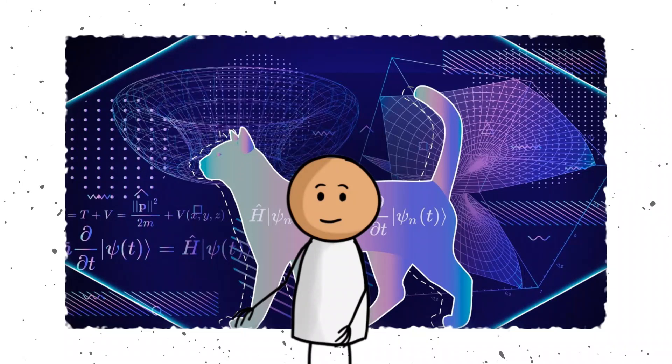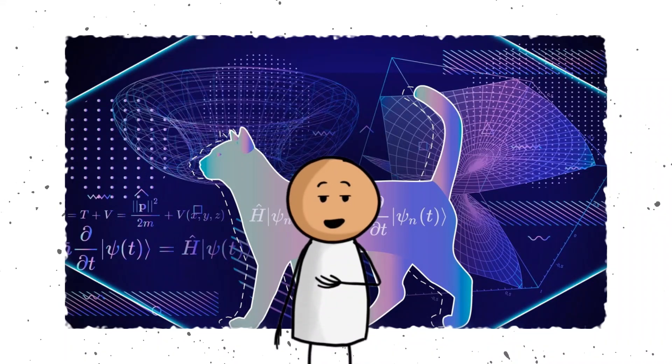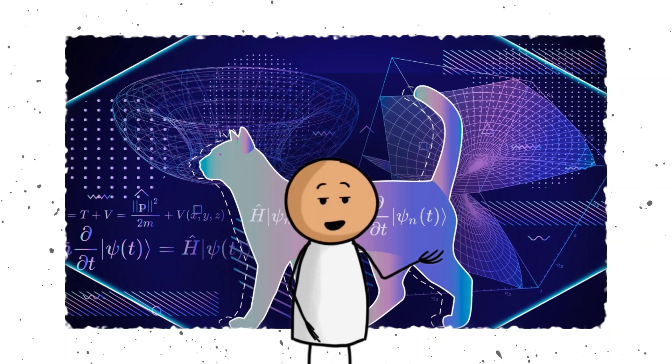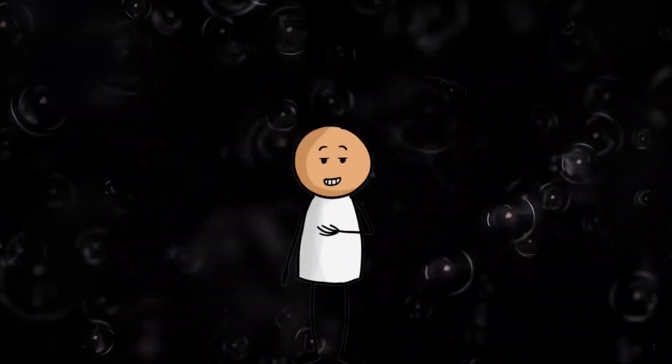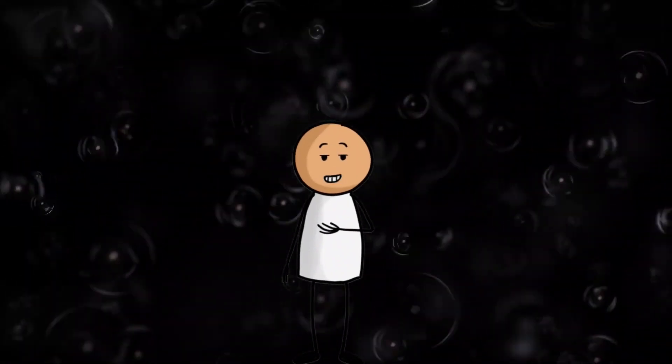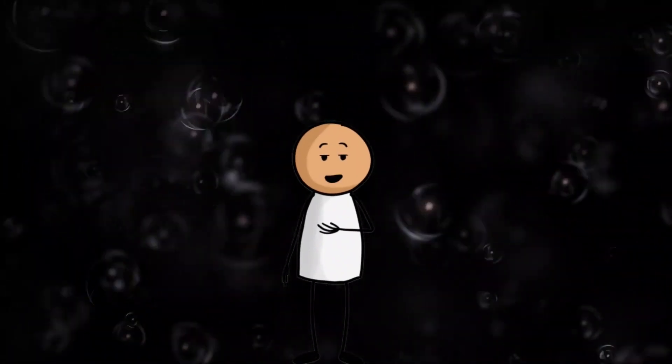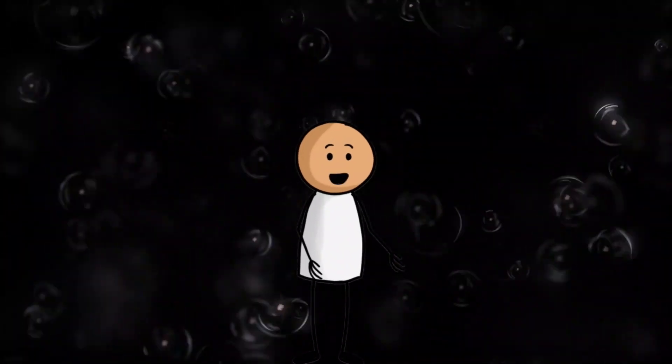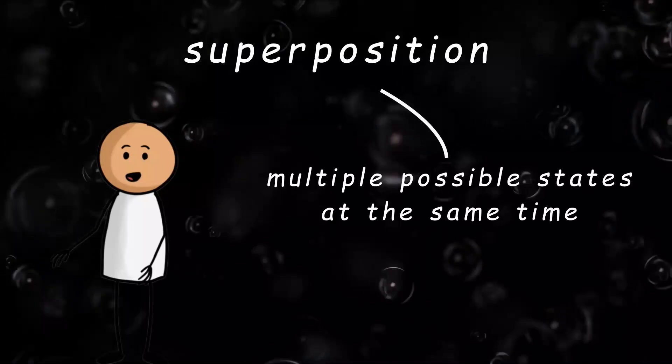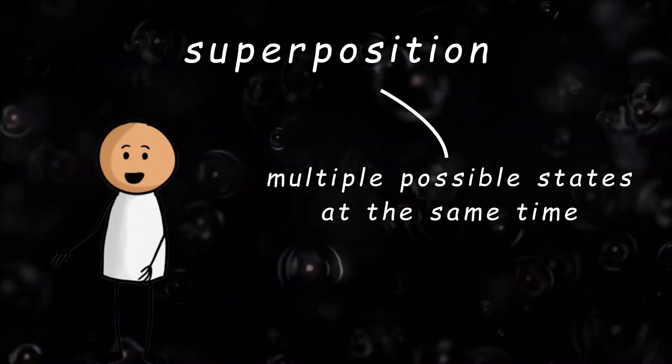Let's talk about the measurement problem. Sounds boring, right? Like maybe it is about measuring flour for cookies? But no, this is one of the strangest and most mind-melting mysteries in quantum physics. Though here is the deal. In the quantum world, particles like electrons and photons do not have one set position or state until someone measures them. Before that, they exist in what is called a superposition, which means they are in multiple possible states at the same time.